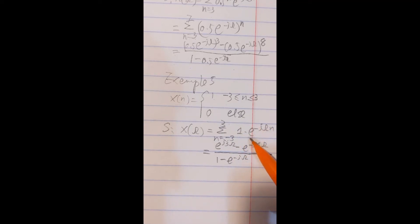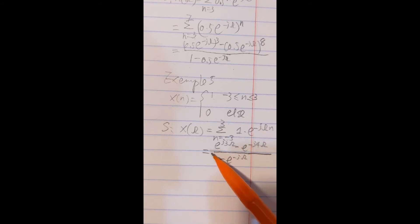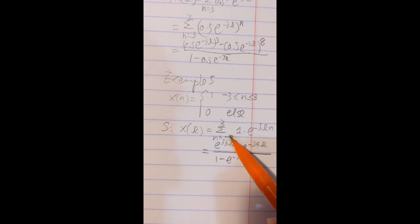Here is complex exponential e to minus j omega. So there's still a geometric sequence, right? So we get the final answer like here: one minus e to minus j omega. Nominator we have e to minus j3 omega, right? Is the first item in your sequence.